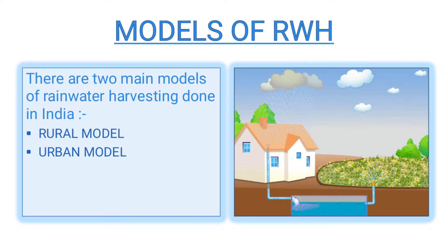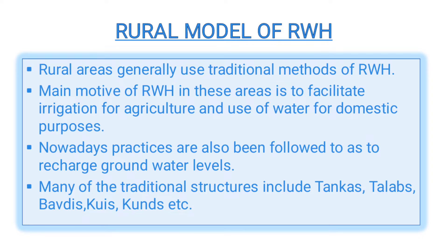Next slide: models of rainwater harvesting. There are two main models — first is the rural model and second is the urban model. In the rural model of rainwater harvesting, traditional methods are used, such as storing water in talabs, bavadis, kuas, and kund. The main purpose of rainwater harvesting in these areas is to facilitate irrigation for agriculture and domestic purposes like drinking, cooking, and bathing.